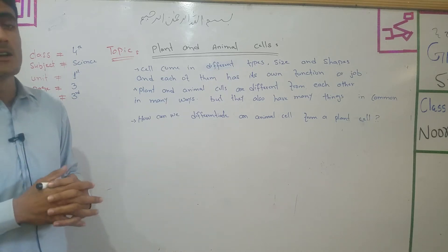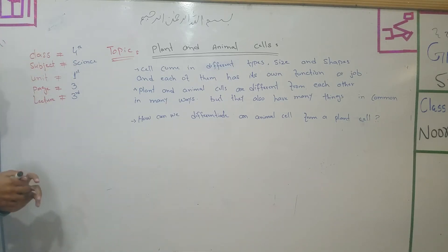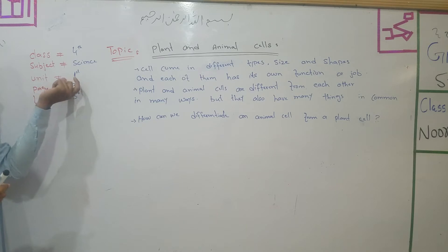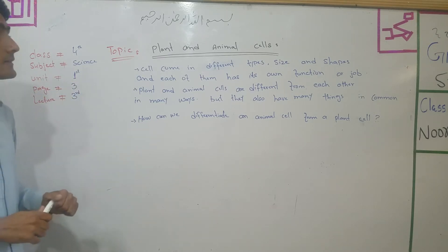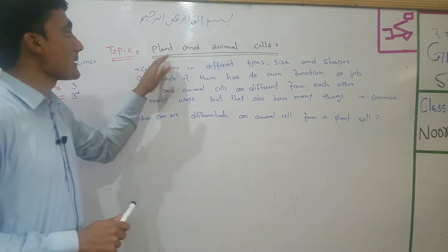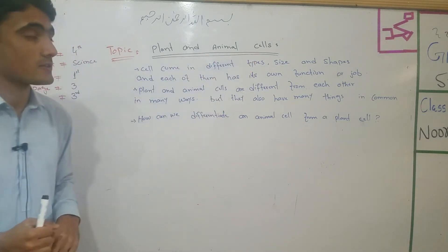Bismillahirrahmanirrahim. Students, the topic is class 4 science, unit number 1, phase number 3, and lecture number 3. The topic is plant and animal cells.